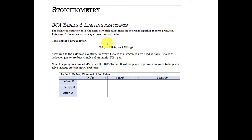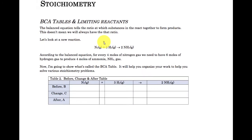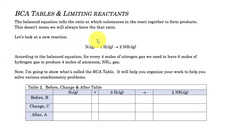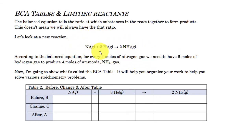Welcome back to another video lesson. Today we're going to focus on stoichiometry, paying particular attention to two things: BCA tables and limiting reactants. First, let's look at the equation we have here. Balanced equations give us information about how elements react together to produce various products — in this case, nitrogen reacting with hydrogen to form ammonia.